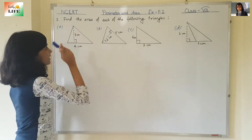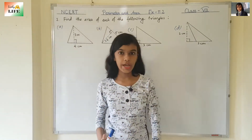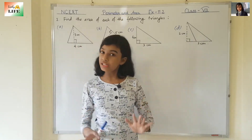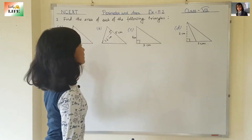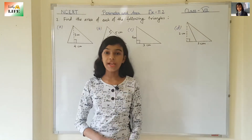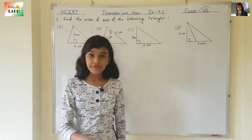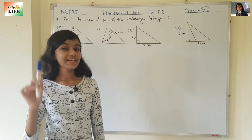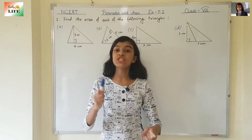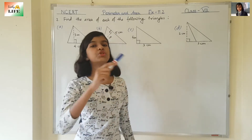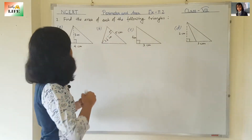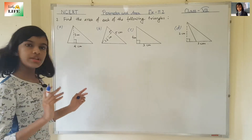Find the area of each of the following triangles. In the previous question, it was parallelograms. Now we need to find the area of these triangles. The formula for finding the area of a triangle is half into base into height. Parallelogram was base into height; this is one-half into base into height. So, let's solve it.